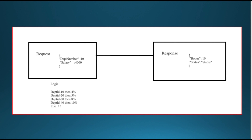We have a request payload and response payload. The request payload contains department number and salary. The requirement is: in case of department 10, we give a 4% bonus; department 20, 5% bonus; department 30, 8% bonus; department 40, 10% bonus; otherwise 15% bonus. Based on the department ID, we calculate the percentage of bonus. As a response, we receive bonus and status, sending status as success.